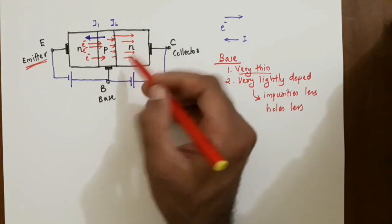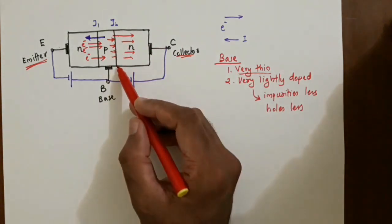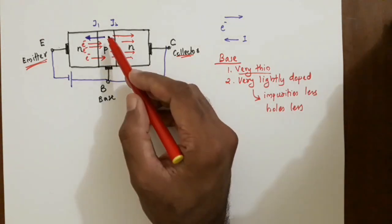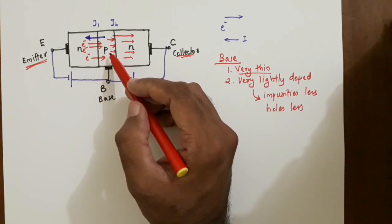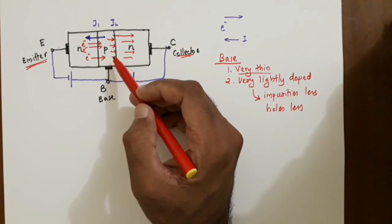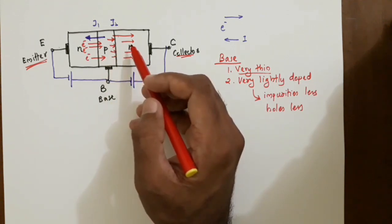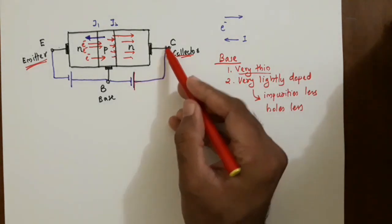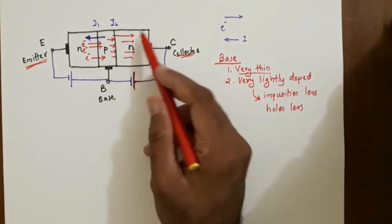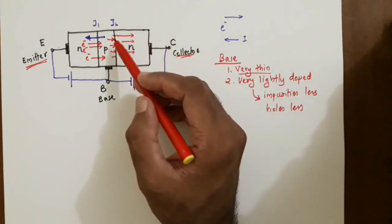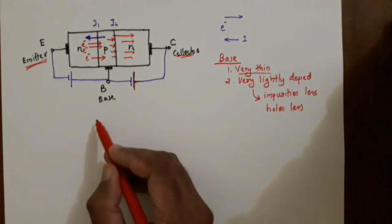The electrons that reach junction J2 will easily pass over to the collector region — that is why the name 'collector.' Even though J2 is reverse biased, the electrons present in the P region are actually minority carriers. Minority carriers can easily pass over a reverse-biased junction because these electrons face the positive terminal of the battery, so they are attracted and easily collected by the collector region.